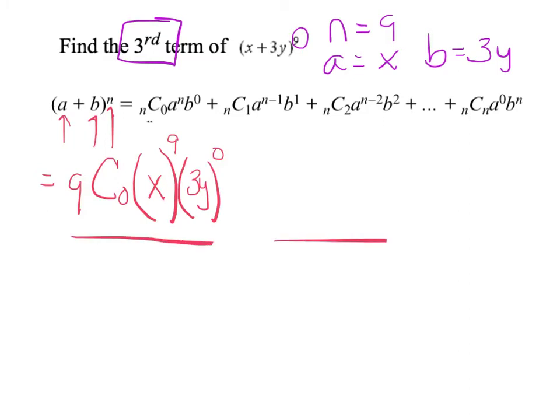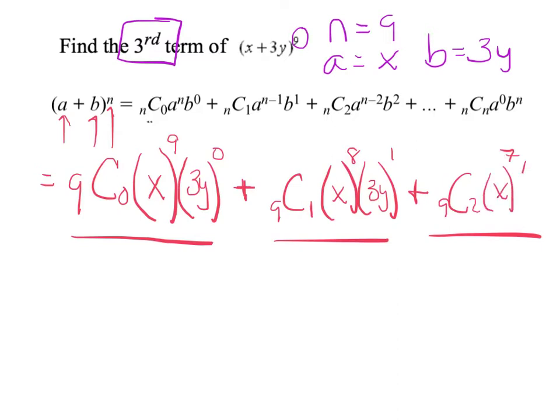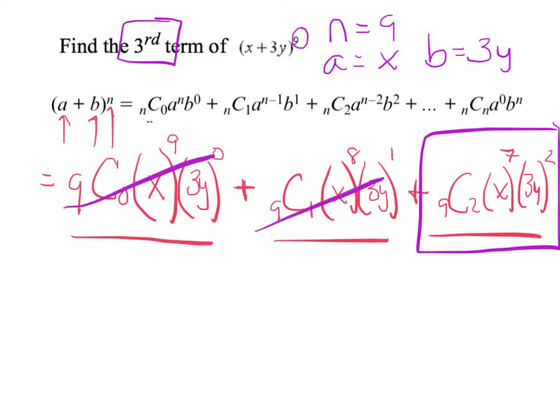n choose 0, 9 choose 0, a, which is my x to the n, b, my 3y to the 0. And it wants the third term, so I'm going to count out until I get to the third term. So that's 1, 2, 3. Then I'm going to have 9 choose 1. There's a plus sign, of course. x to the 8th, 3y to the 1st, plus 9 choose 2, x to the 7th, 3y squared.